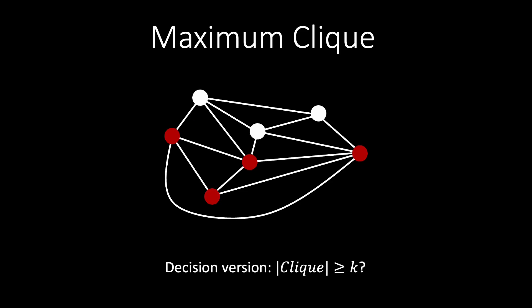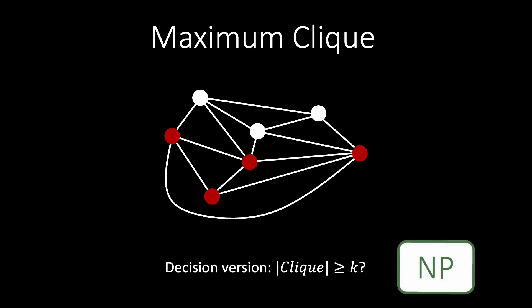Similarly to vertex cover and independent set, finding a clique of a certain size is difficult and we do not know of a polynomial time algorithm. However, if someone gives us a set of vertices, we can determine in polynomial time if those vertices form a clique by simply checking whether all the edges are present. Thus, maximum clique is another problem in NP.